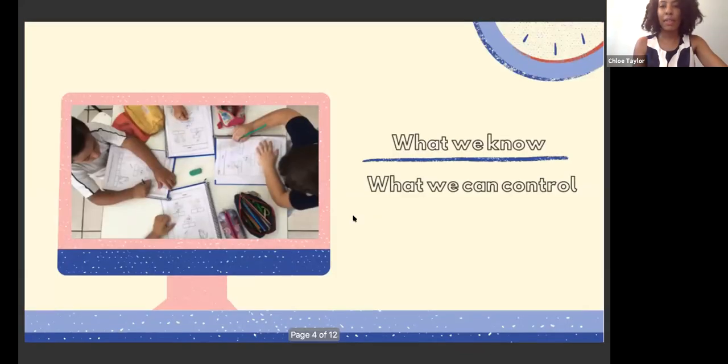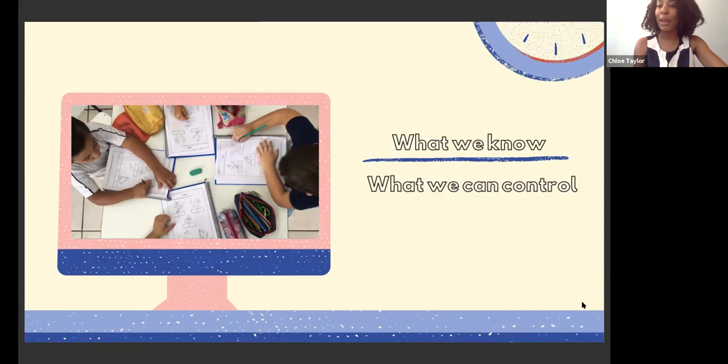Let me flip to what we know and what we can control. I'm getting a little bit philosophical here. So what we know: kids should be in school. Kids need structure. Kids need to know what to expect. They want to go to school. I think we all know that and can agree to that.